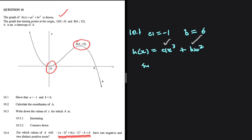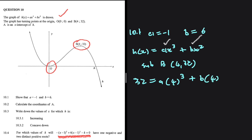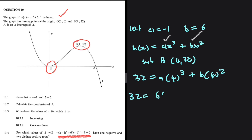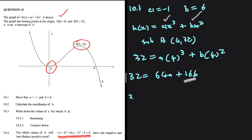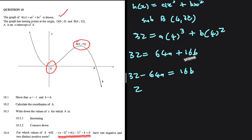Let's substitute the point at x equals 4. The value of h of x will be 32 and x will be 4, giving us 32 equals 64a plus 16b. Making b the subject, we get 32 minus 64a equals 16b. Dividing both sides by 16, we get b equals 2 minus 4a. We can call this equation 1.